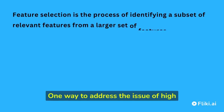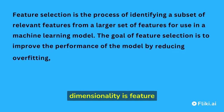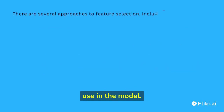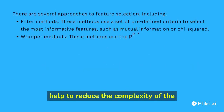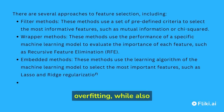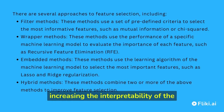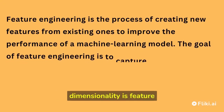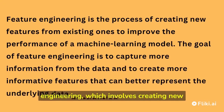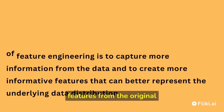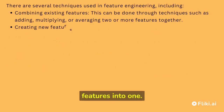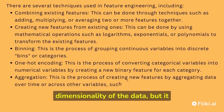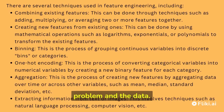One way to address the issue of high dimensionality is feature selection, which involves selecting a subset of the features to use in the model. Feature selection can help reduce model complexity and prevent overfitting, while also increasing interpretability. Another way is feature engineering, which involves creating new features from the original ones or combining several features into one, helping to reduce dimensionality, though it requires a good understanding of the problem and the data.